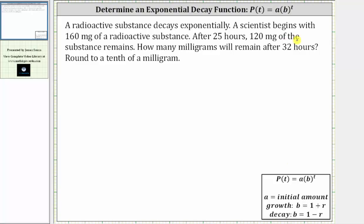In this case, because the scientist begins with 160 milligrams of a radioactive substance, we know a, the initial or starting amount, is equal to 160.